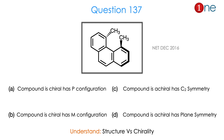Then we have the next question. Here you have a phenanthrene-type system with 2 methyl groups — one benzene ring is above the plane and the methyl which is below the plane. They are asking what is the configuration: whether they are P or M, whether the compound is chiral or not, or if it has C2 symmetry or a plane of symmetry. The question is really about structure versus chirality. The answer is A.